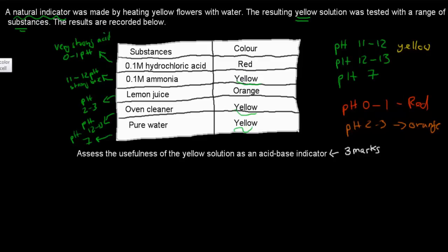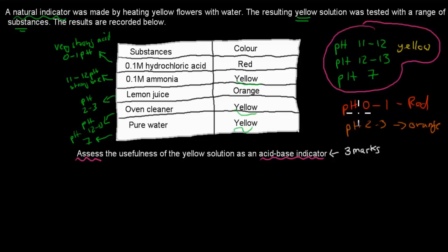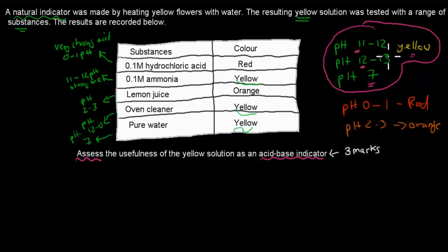Now the question says 'assess', which means we need to evaluate and ultimately say whether it's really useful as an indicator. We have to figure out if it's useful to distinguish between acids and bases. When it comes to bases, it probably wouldn't be useful, because pH 7 neutral, pH 11 to 12 moderate base, and pH 12 to 13 strong base all turn the same color yellow. So if something is yellow, we don't know if it has a pH of 7 or a pH of 13.